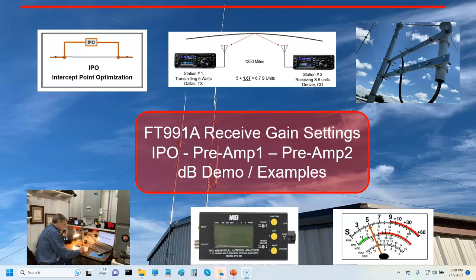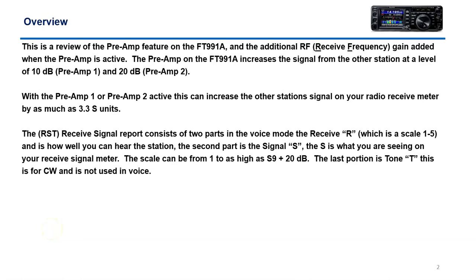I've been wanting to go over the FT991A gain settings and preamp settings. There are three of them: IPO, preamp 1, and preamp 2. I wanted to explain what they mean when they talk about dB, because if you look at the 991A manual, it just says preamp 1 gives you 10 dB gain and preamp 2 gives you 20 dB gain. Well, we're not using dBs on the S meter — we're using S units. So I had to figure out the relationship between decibels and S units. Essentially, preamp 1 or preamp 2 can increase the signal by as much as 3.3 S units. The rule of thumb is every 6 dB — or 4 times power increase — equals 1 S unit. Every 6 dB is 1 S unit. That's the shortcut.